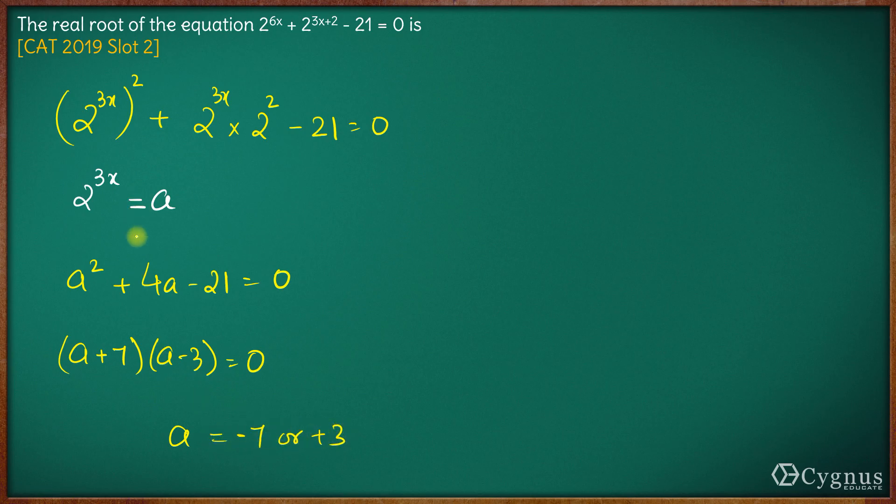Now, what is a? a is 2 raised to power 3x. Now we know any power of a positive number, the answer will always be positive, it cannot be negative. Hence we can reject minus 7. 2 raised to power 3x can never be equal to minus 7, right?